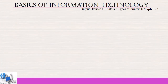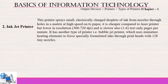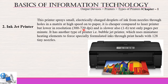The next non-impact printer type is inkjet printer. Inkjet printer sprays small electrically charged droplets of ink from nozzles through holes in a matrix at high speed onto paper. It is cheaper compared to laser printer but lower in resolution, from 300 to 720 dpi (dots per inch), and is slower at 1 to 6 text-only pages per minute. It also has a variant called bubble jet printer, which uses a miniature heating element to force specially formulated inks through print heads with 128 tiny nozzles to create better quality colored pictures.